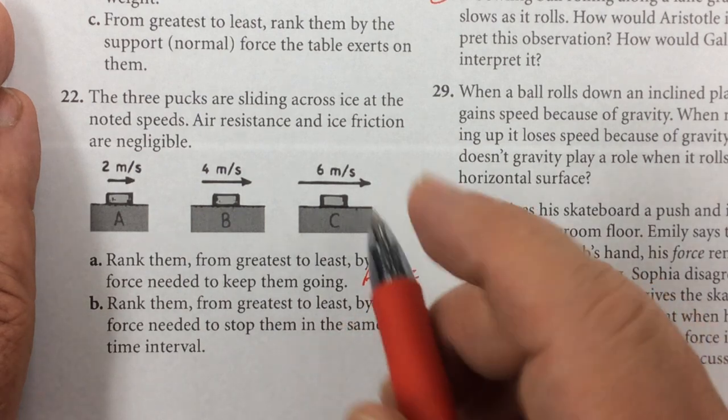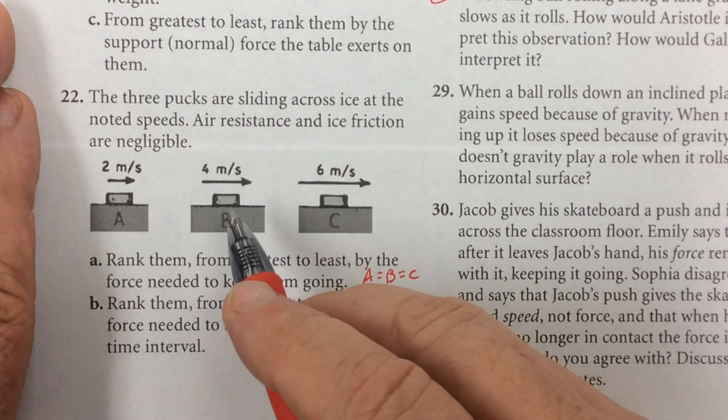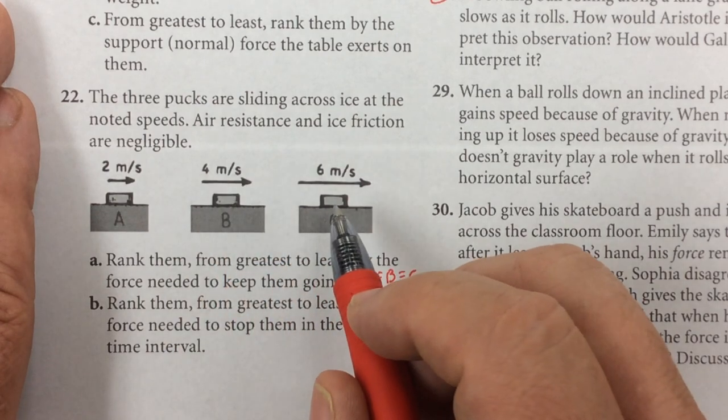Which one is harder to stop? This one's going 2 meters per second. This one's 4. This one's 6. Okay.